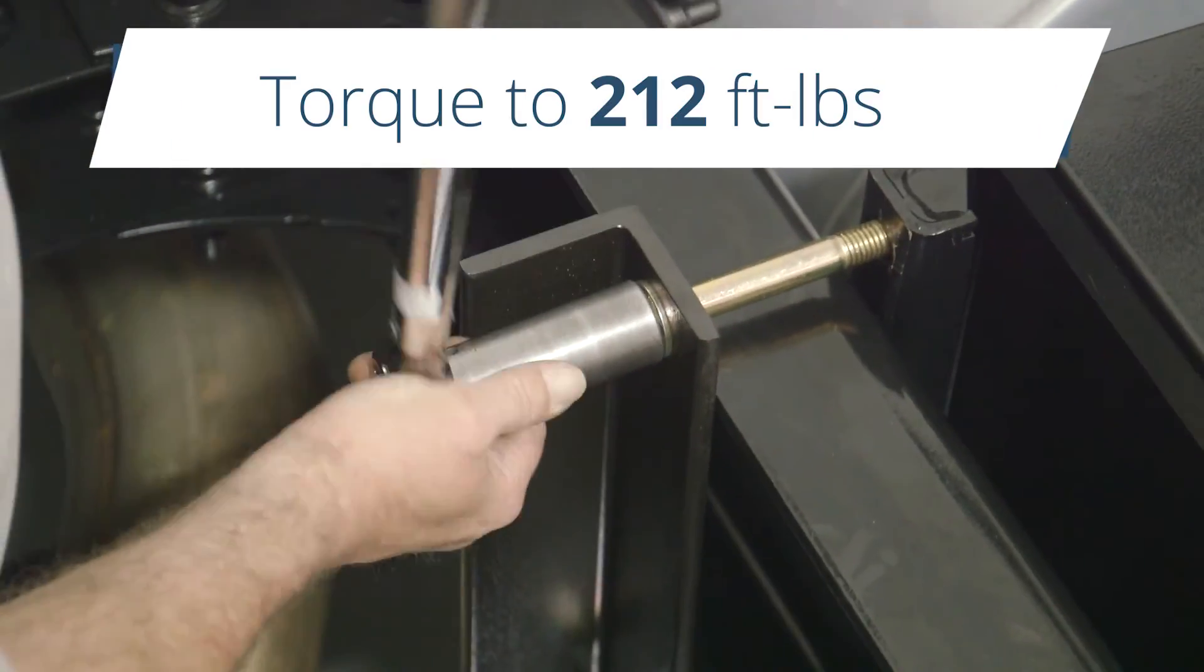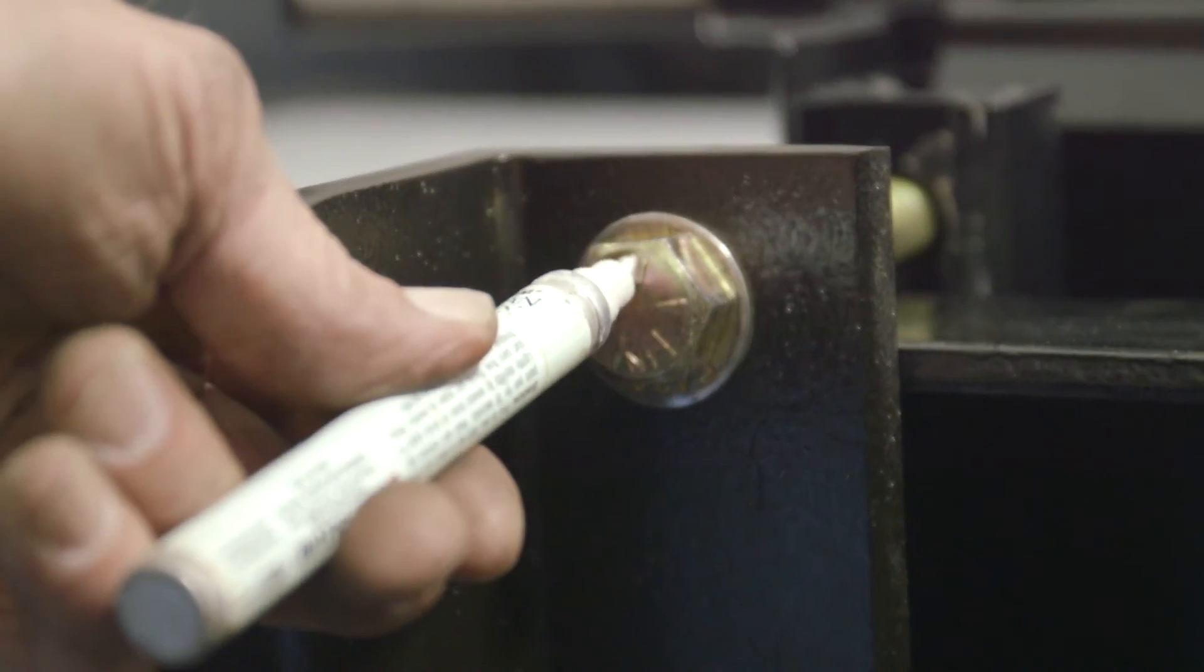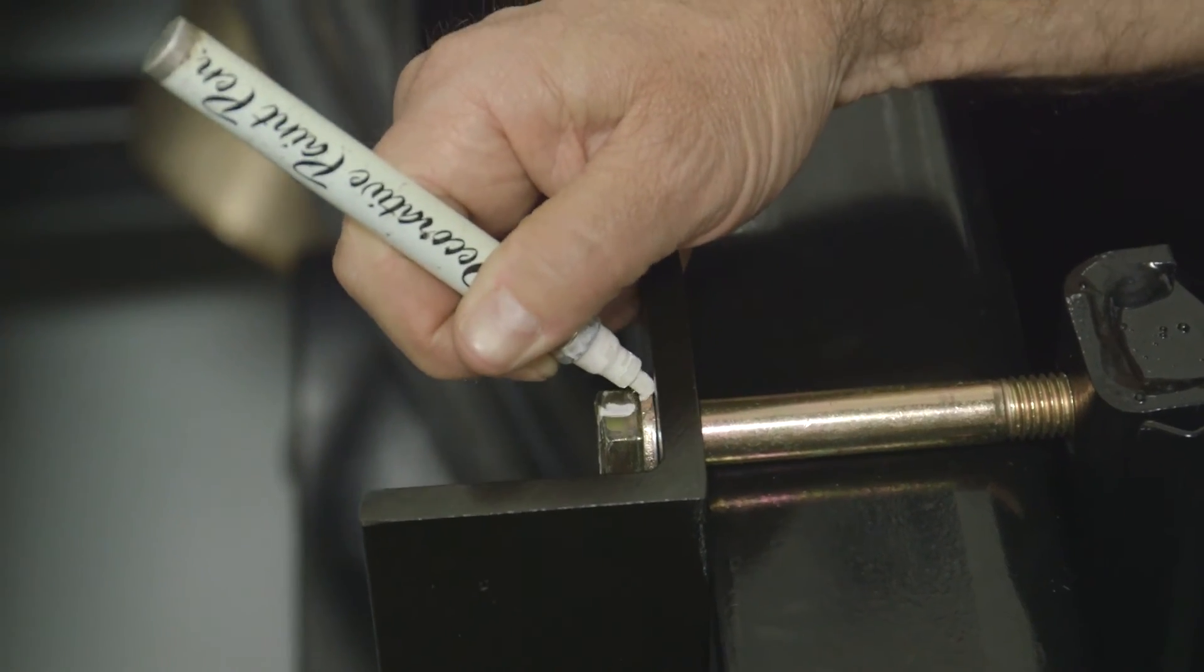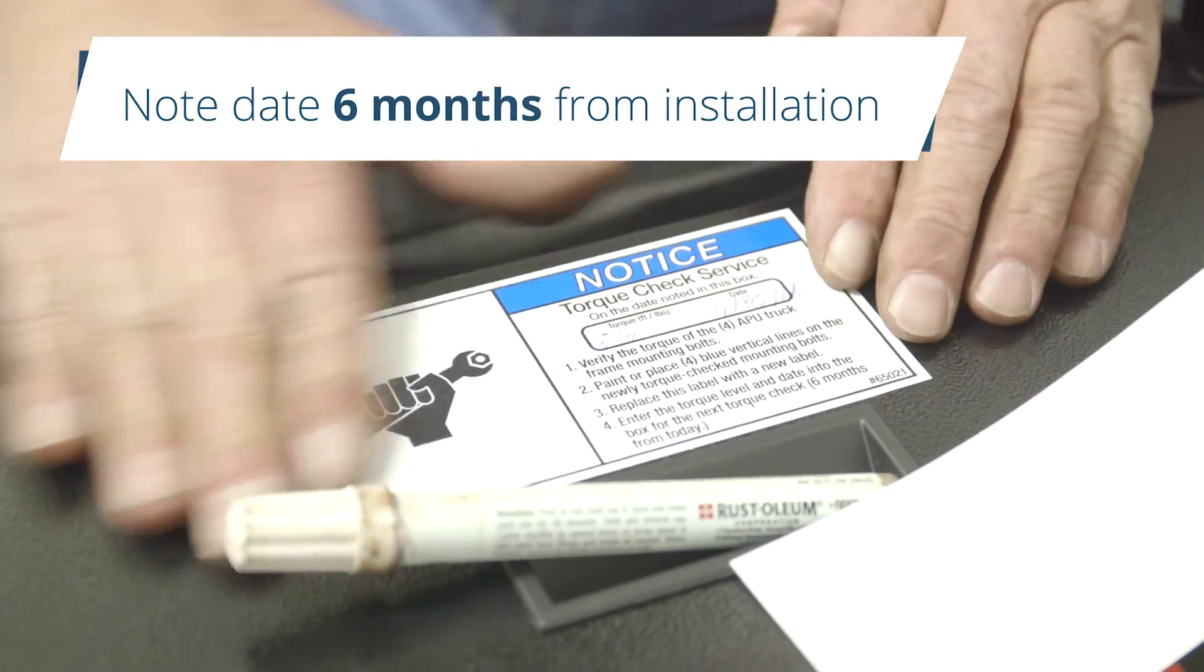Remove the lift and ensure that the bolts are torqued to 212 foot-pounds. Add a vertical witness mark on each bolt and adhere to the torque check service label on the frame rail unit's cover. Write the date six months from the installation on the label.